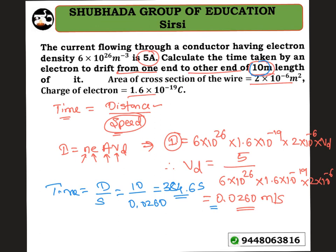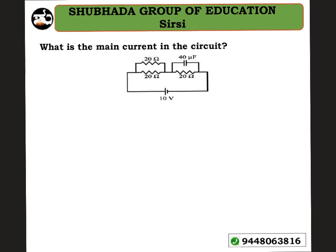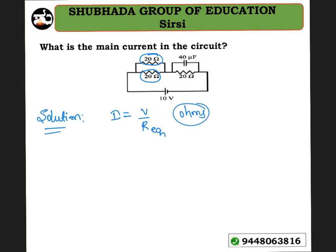Next problem: what is the main current in the circuit? This is a conceptually oriented problem. We have a 20 ohm resistor in parallel with another 20 ohm resistor. To calculate the current, I use I = V / R_equivalent from Ohm's law. So R_equivalent: 20 ohm in parallel with 20 ohm gives (20×20)/(20+20) = 10 ohm.